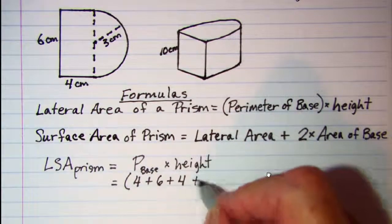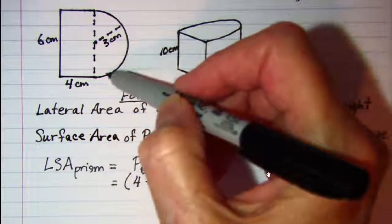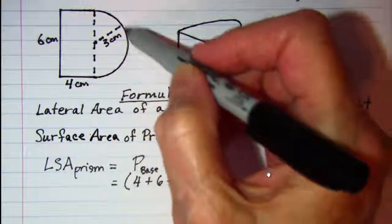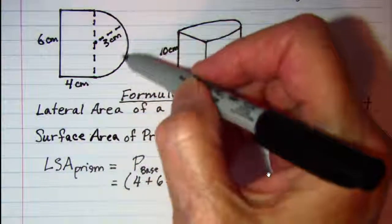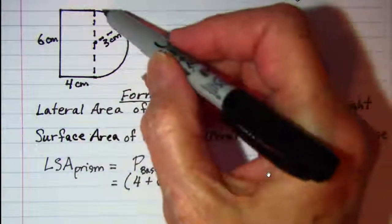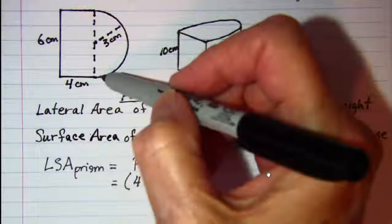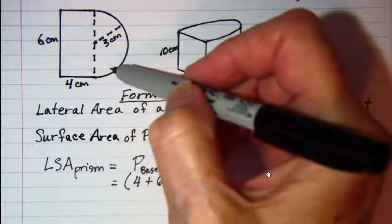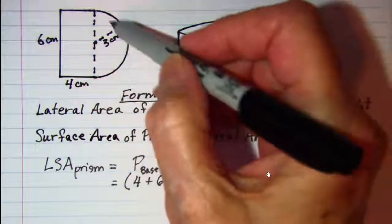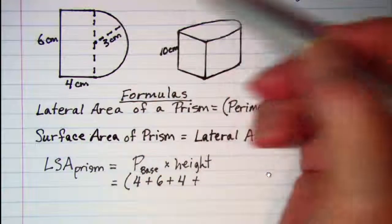So we have 4 + 6 + 4 and then we have this curve. We want the perimeter or the distance around this curve. Now normally when we talk about a circle or in this case a semi-circle, we talk about a circumference.